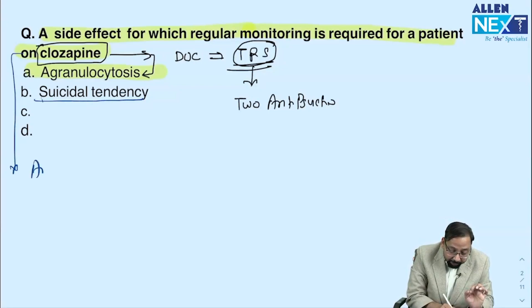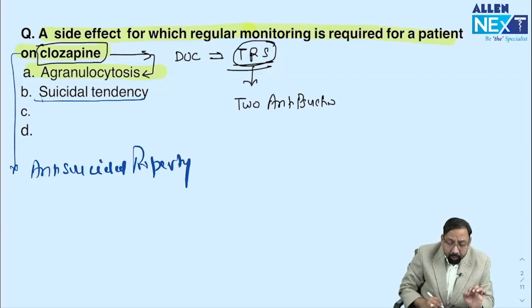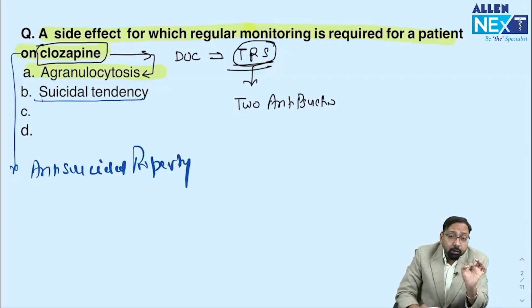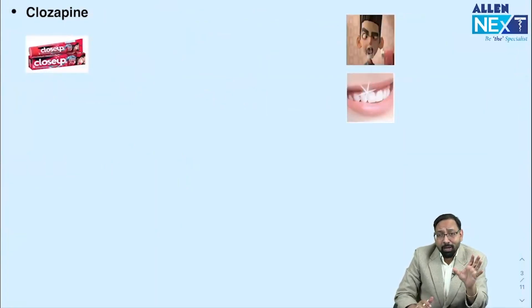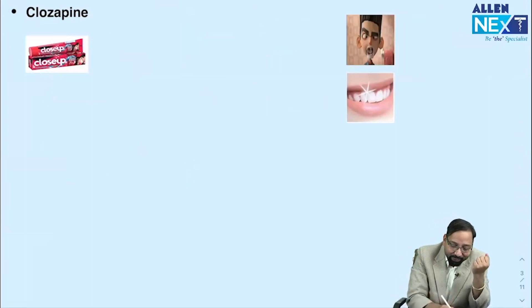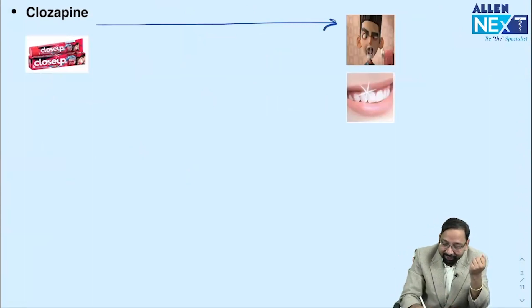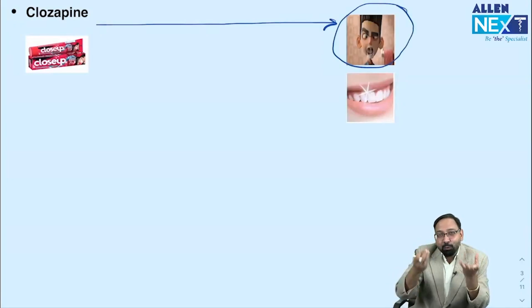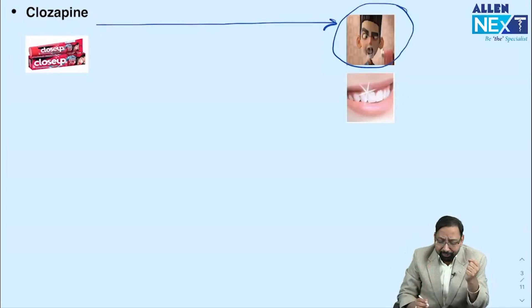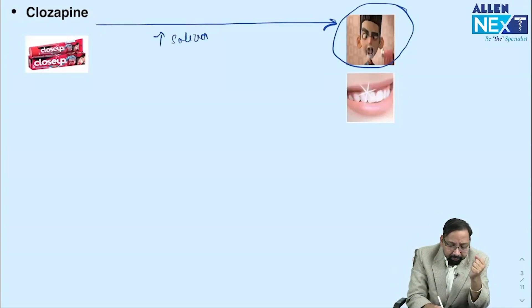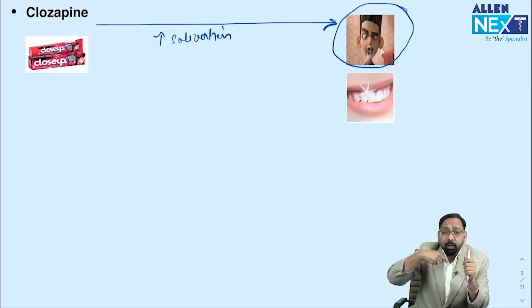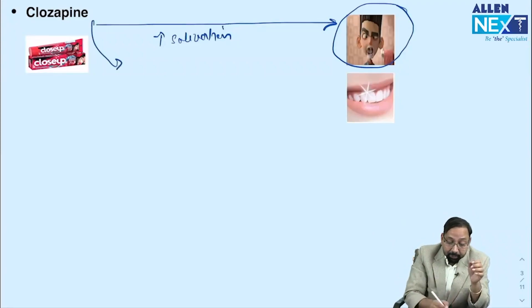A mnemonic: remember clozapine as 'Close-Up' toothpaste. Whenever you brush with Close-Up, there is salivation. So a common side effect of clozapine is increased salivation. Another mnemonic: if you brush very rapidly, anyone watching would say you are having seizures — representing clozapine's side effect of seizures.